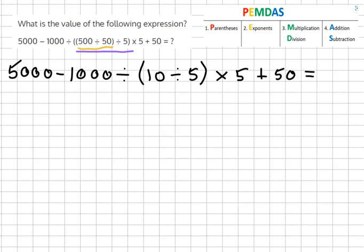And then we're going to open up the rest of the parentheses so it becomes 5,000 minus 1,000 divided by 10 divided by 5 which gives us 2 times 5 plus 50.